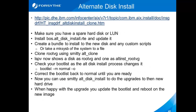I have a link here — it's an older link — on using alternate disk install clones. You have to have a spare hard drive or LUN. You will need to install the boss.altdiskinstall.rte and make sure it's updated to the latest service pack. Then you're going to basically create bundles to install, and you can use smit altclone to clone it.